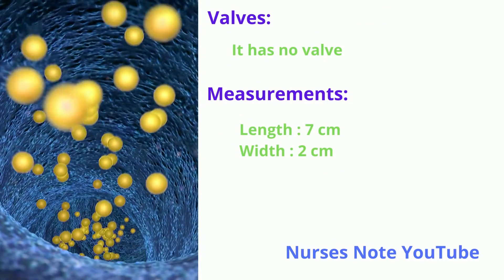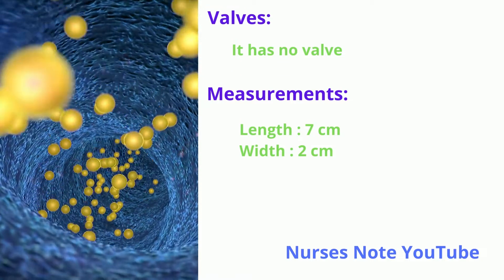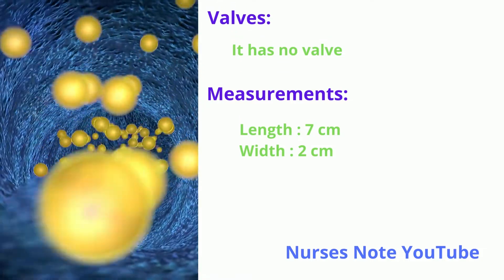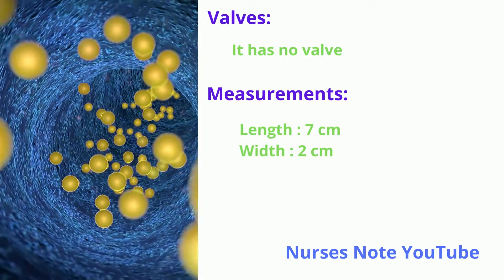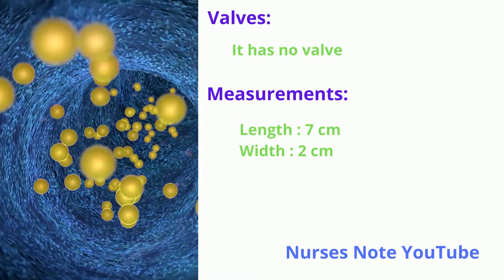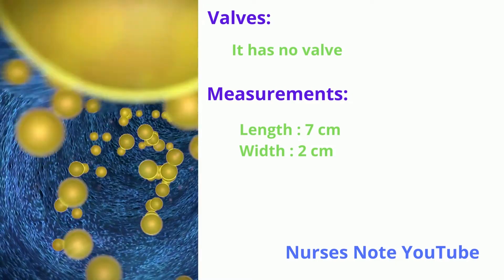Valves: the Superior Vena Cava has no valve. Measurements: length is 7 cm and width is 2 cm.